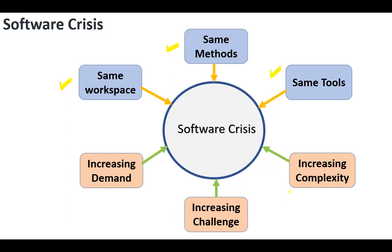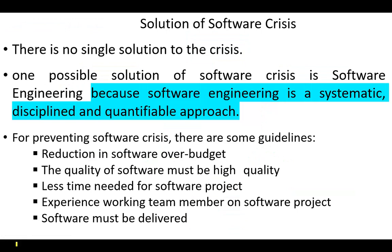There is no single solution to the software crisis. One possible solution is software engineering, because software engineering is a systematic, disciplined, and quantifiable approach.